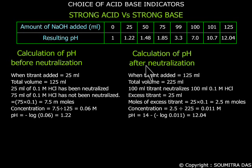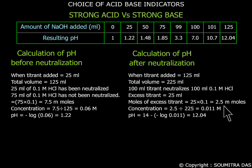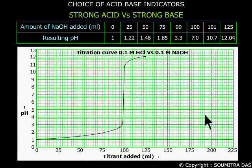After neutralization, pH is calculated as follows: NaOH added equal to 125 ml, total volume equal to 225 ml. Volume of NaOH remaining after neutralization equal to 25 ml, which is equivalent to 2.5 mmol, which again corresponds to 0.011 molar concentration, which has a pH equal to 12.04. Now this is called the titration curve.